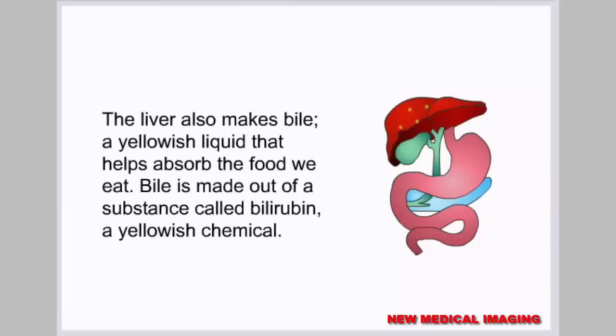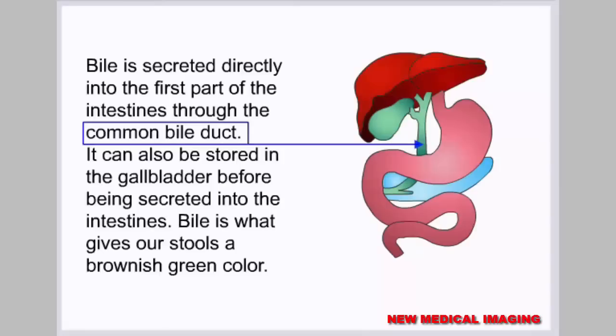The liver also makes bile, a yellowish liquid that helps absorb the food we eat. Bile is made out of a substance called bilirubin, a yellowish chemical. Bile is secreted directly into the first part of the intestines through the common bile duct. It can also be stored in the gallbladder before being secreted into the intestines. Bile is what gives our stools a brownish-green color.